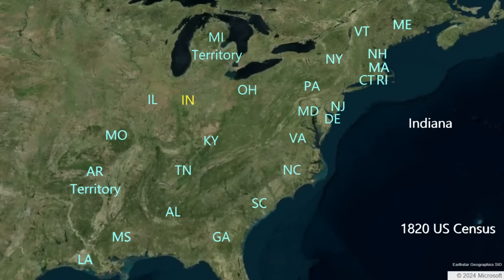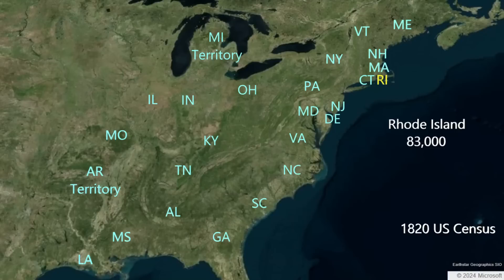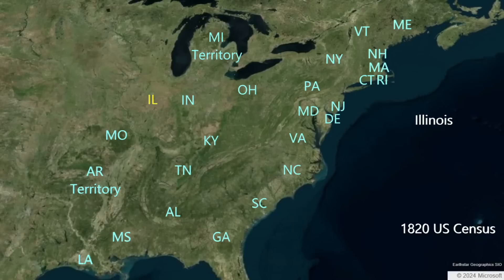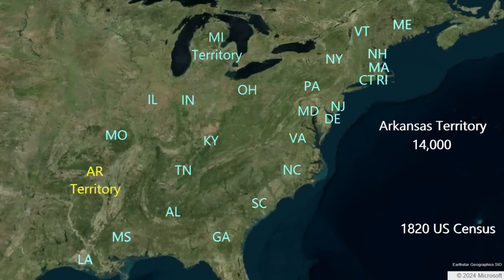The new state of Indiana counted 147,000. Alabama had a population of 128,000. Rhode Island had a population of 83,000. The new state of Mississippi had 75,000 residents. Delaware had 73,000 souls. Missouri, the new slave state of the Missouri Compromise to balance the new Free State of Maine, had 67,000 residents. Illinois had 55,000 residents. In the southwest, the Arkansas Territory had 14,000 people, and the territory of Michigan in the far northwest had 9,000 intrepid settlers.